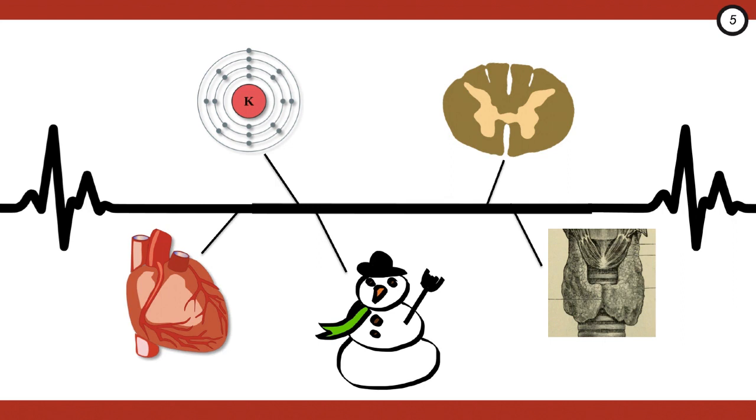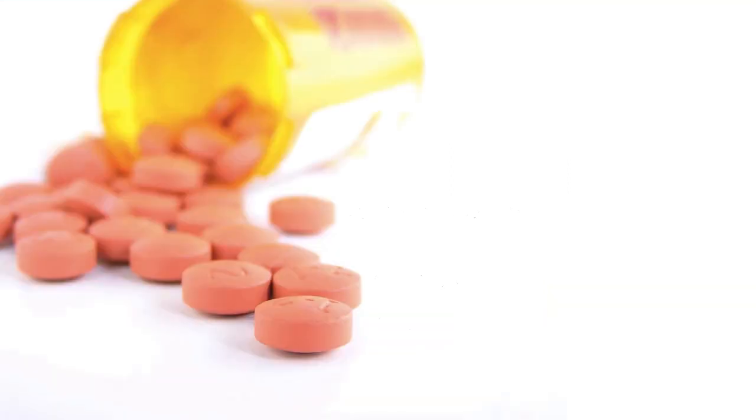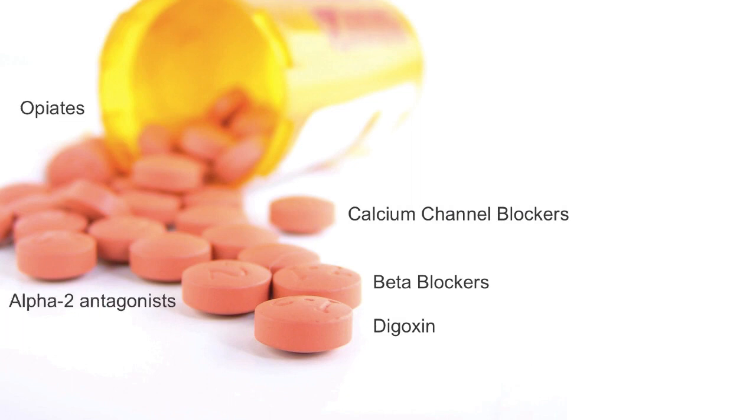Next, there are the tox causes and these can be elusive, especially if the history is not there. We talked about the big three: calcium channel blockers, beta blockers, and digoxin. Then we also talked about opioids, alpha-2 antagonists, as well as some sodium channel blockers like TCAs and cocaine. Today, we're going to focus on digoxin.